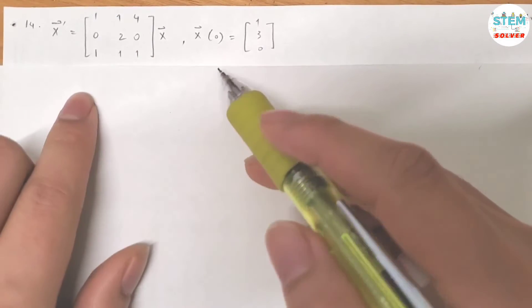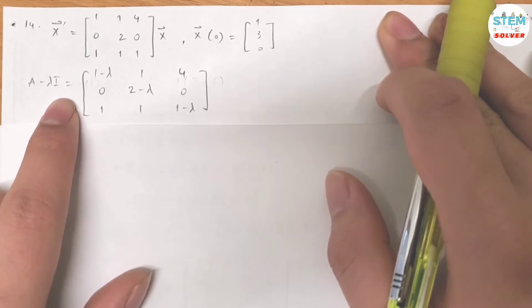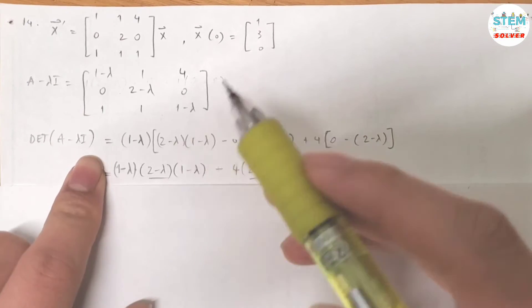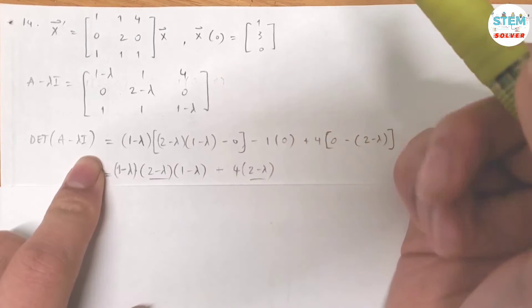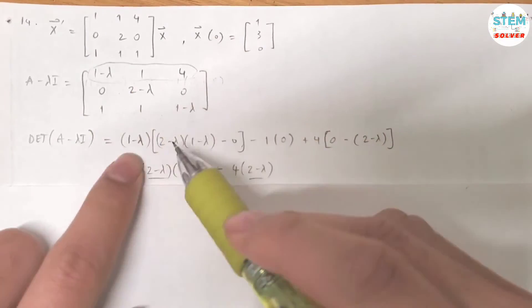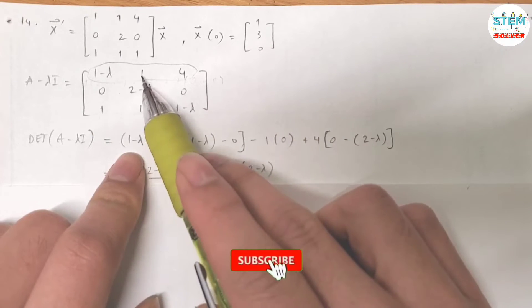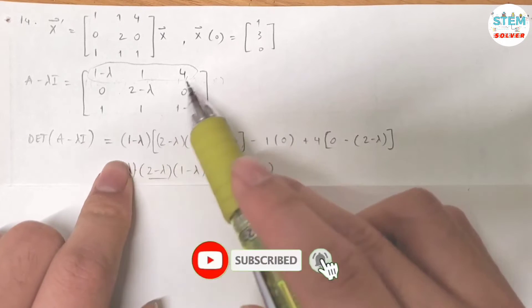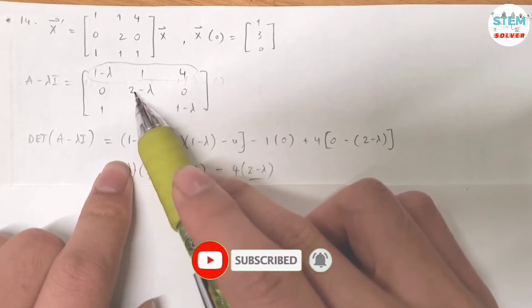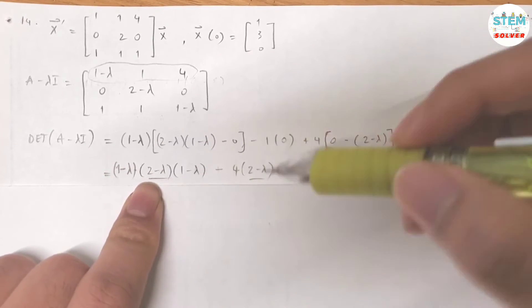First you need to find A-λI and then find the determinant of it. I'm gonna go across the row. So (1-λ) times (2-λ) times (1-λ) minus 0, minus 1 times 0, plus 4 times 0 minus 2 minus λ times 1. Distribute this out and then simplify down.